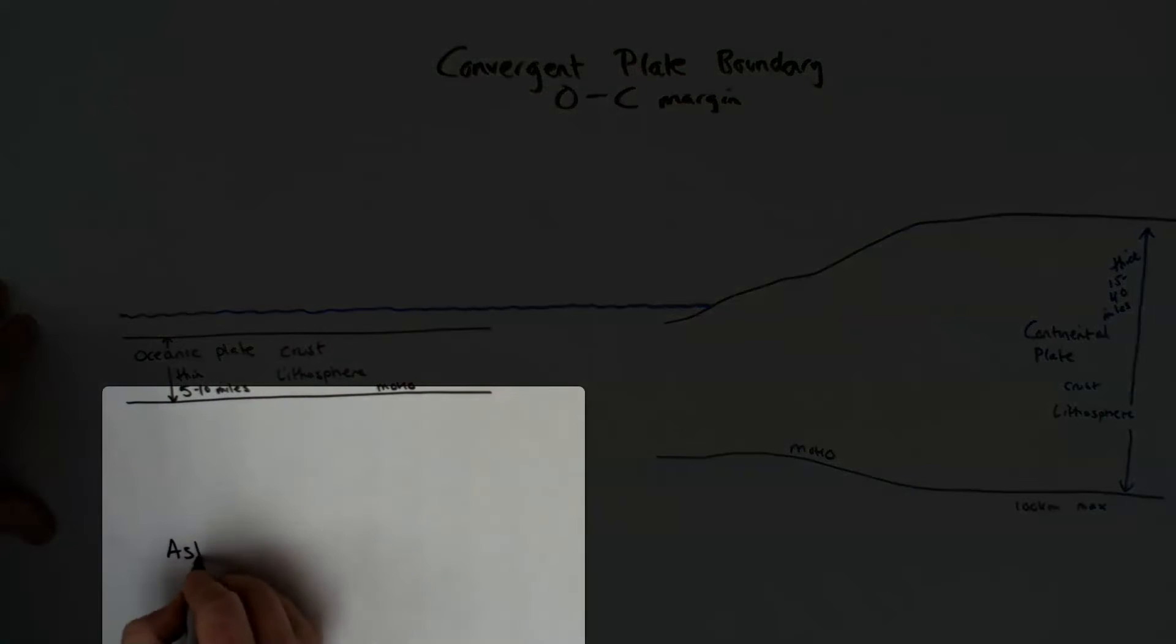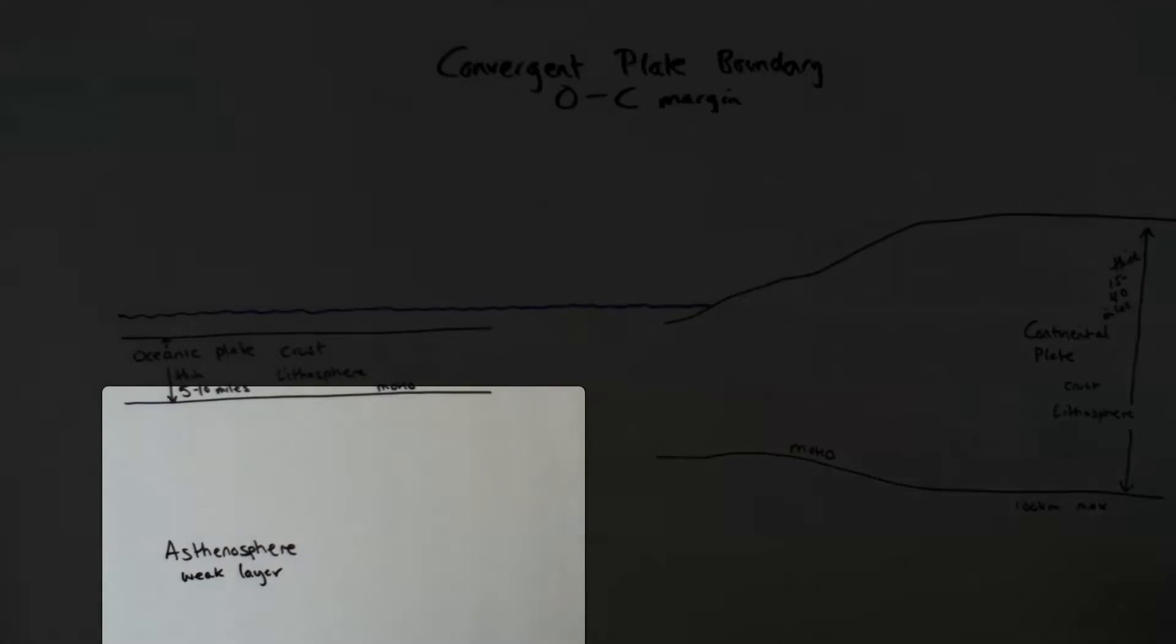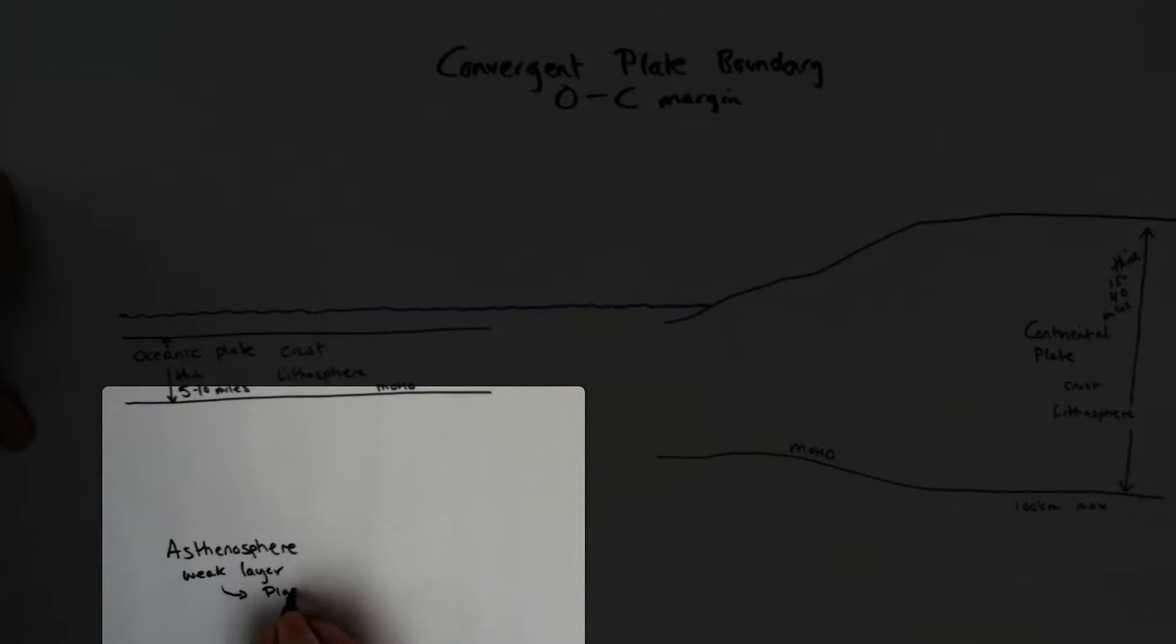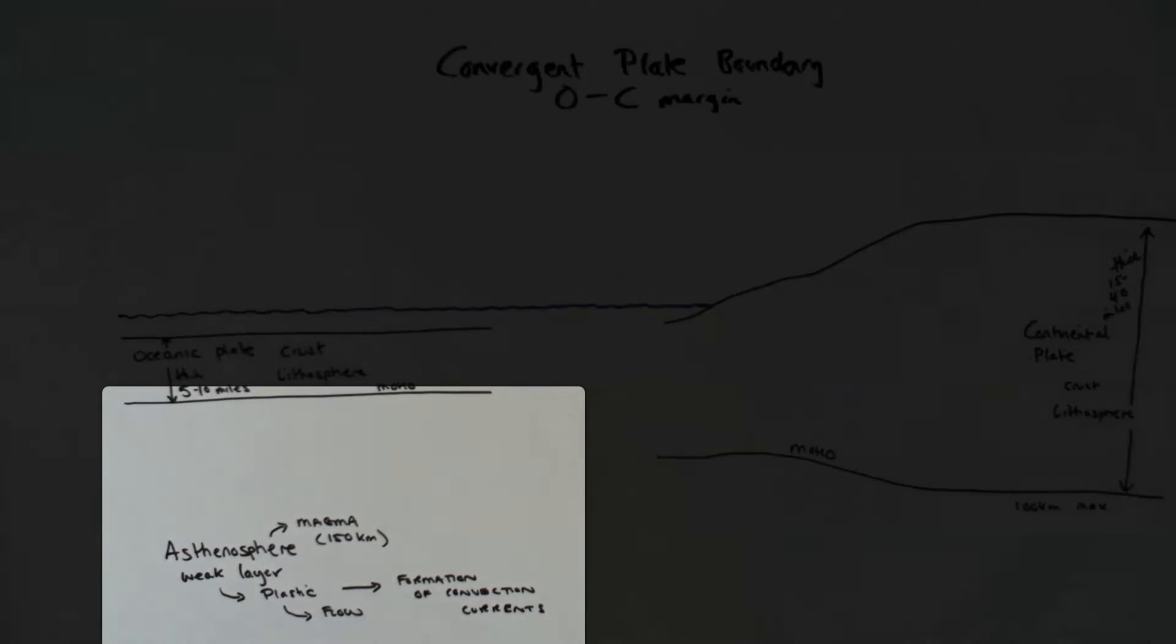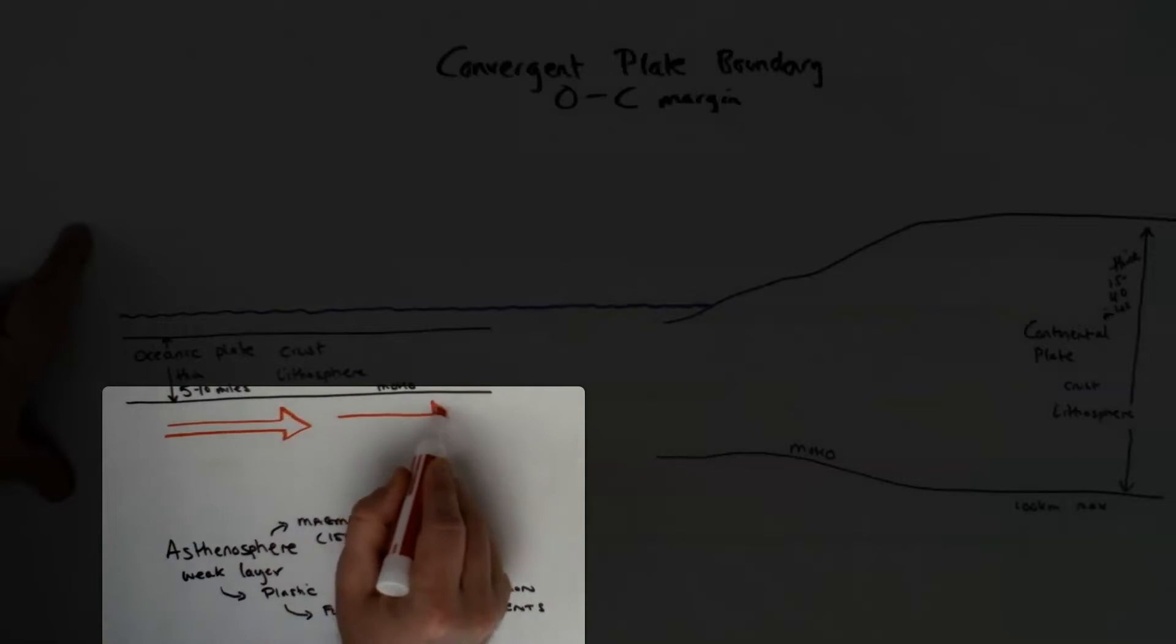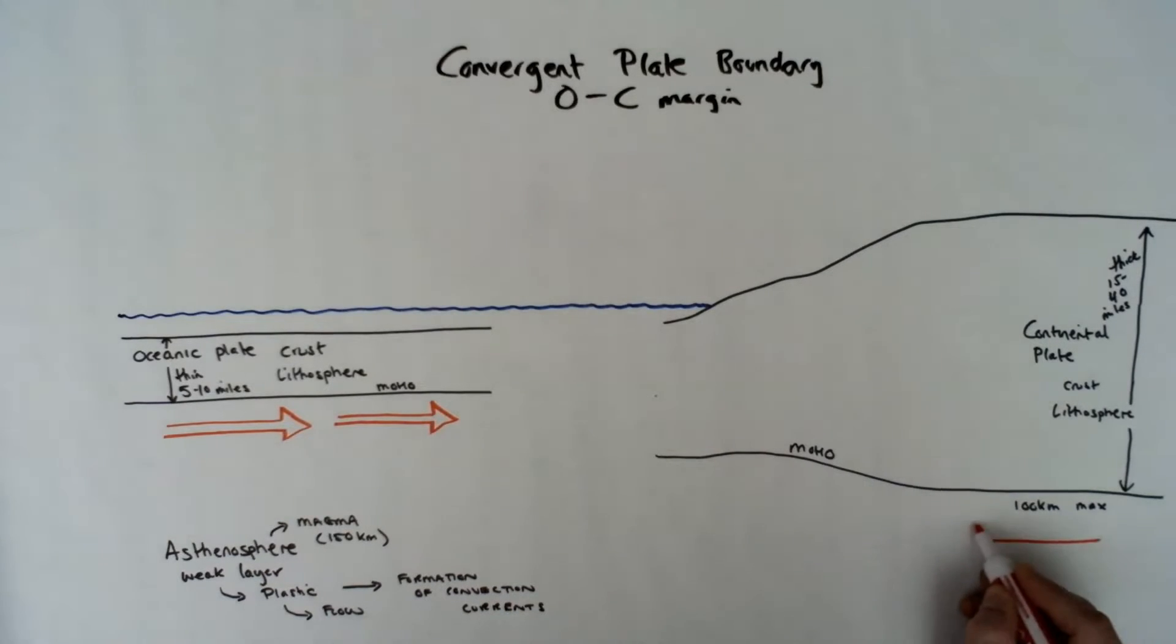So underneath the crust and the lithosphere is the asthenosphere. This is the thicker layer where we have the movement, the convection currents. It's plastic in behavior, it flows due to the heat, and this convection current that exists in this layer is the mechanism that moves and drives plate tectonics.